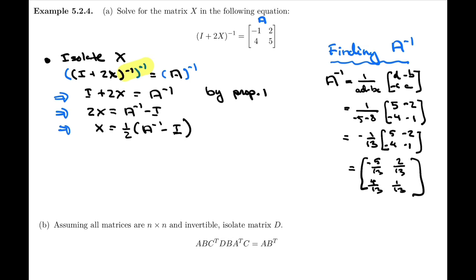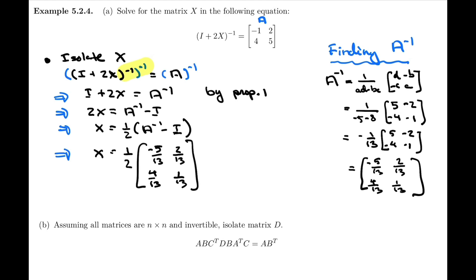So we're ready to put that back into our expression. We have X equals one half times the matrix A inverse — that's [negative 5/13, 2/13; 4/13, 1/13] — minus the identity matrix I, which is [1, 0; 0, 1].